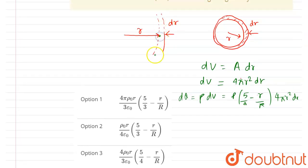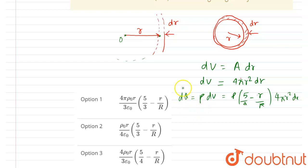Now we can calculate the charge enclosed within any sphere of radius r. If we take a sphere of radius r from the origin, we can find the enclosed charge and then apply Gauss's law to calculate the electric field at that distance r. So let's integrate.